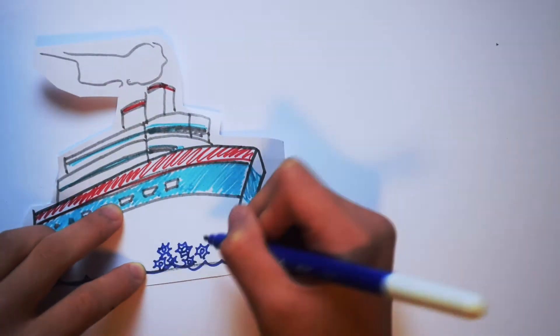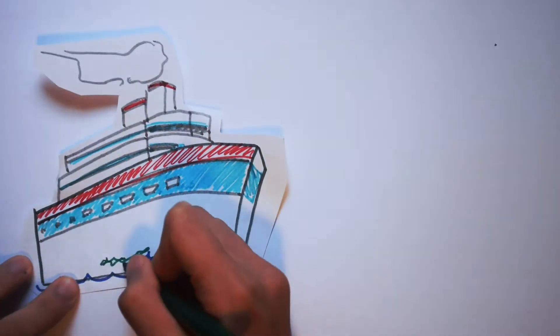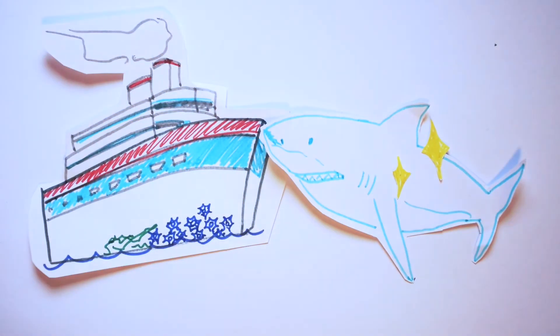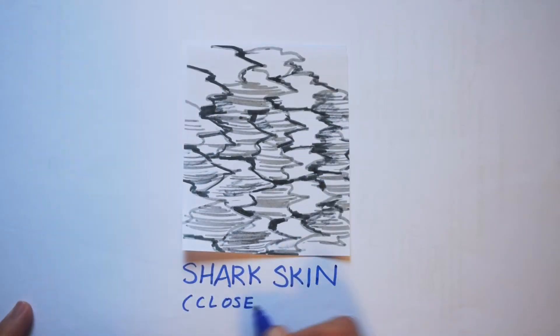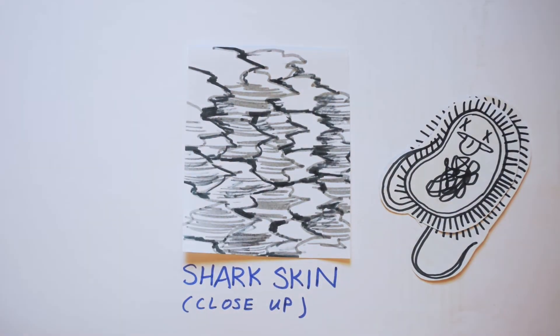We know that barnacles and algae grow on ships. Sharks also move in water, so why don't barnacles grow on sharks? This is because the structure and roughness of shark skin makes it harder for them to attach to the shark and thus prevents them from growing. This also applies to bacteria and algae.